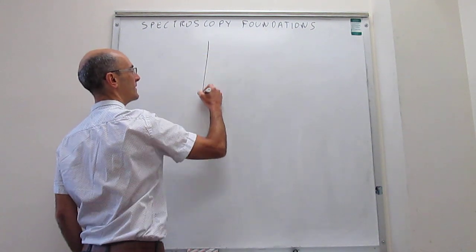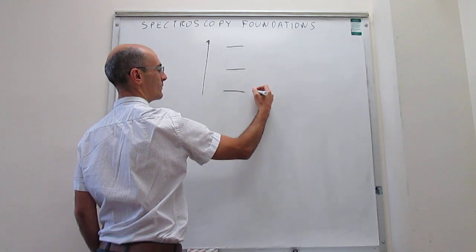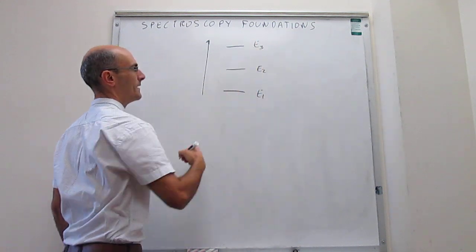So we're going to simplify those quantized energy levels by just drawing a few of them. We're going to call these the first energy level, that is the second energy level, and so forth.